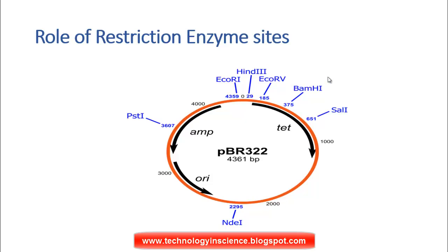So if you have a gene of interest and want to clone it, you first cut the plasmid using one of these restriction enzymes, ligate your gene of interest into the plasmid, and then transform it into the host — in this case E. coli. The plasmid has an ori, the origin of replication site, which is essential for the plasmid to replicate inside the bacterial cell.